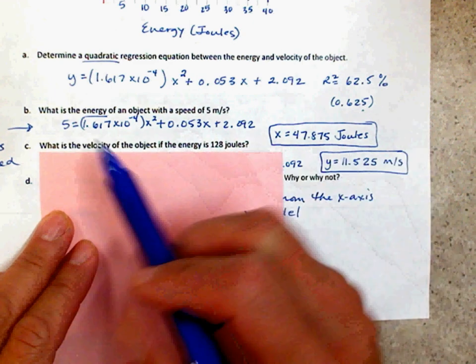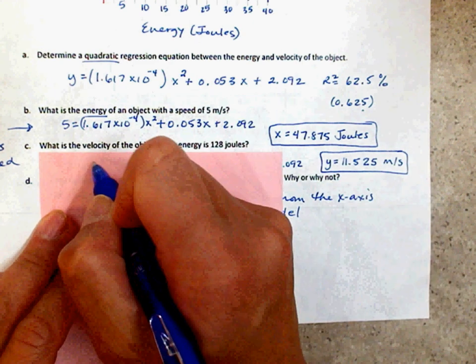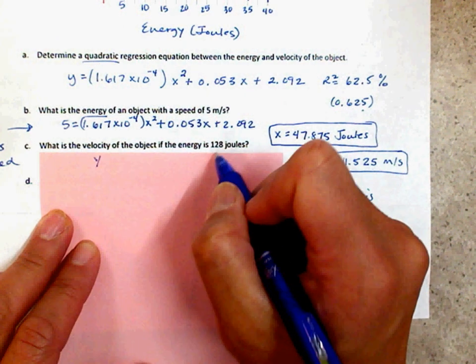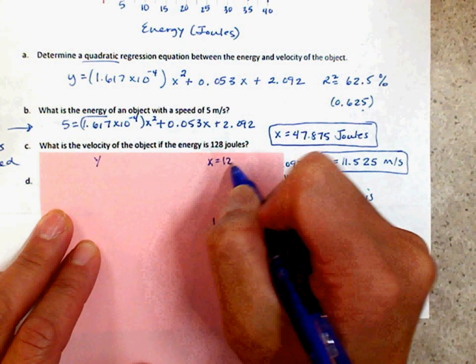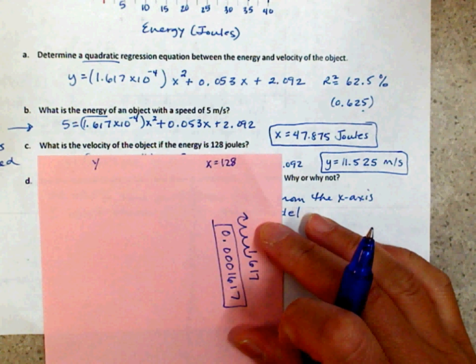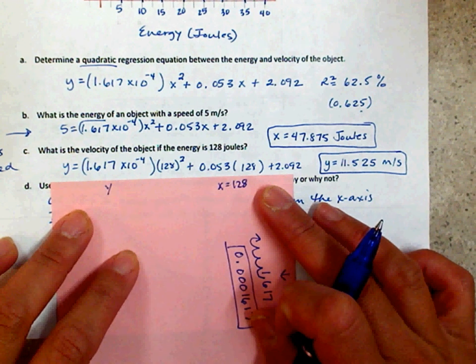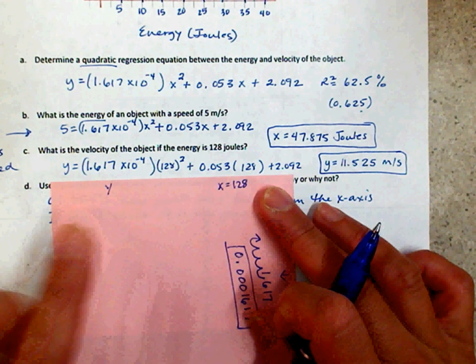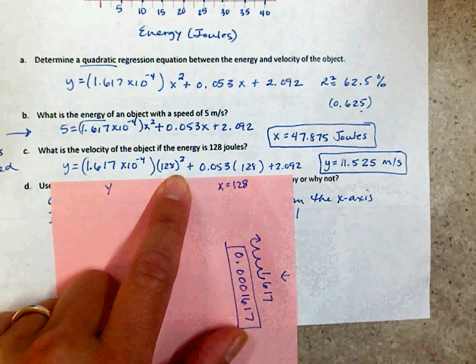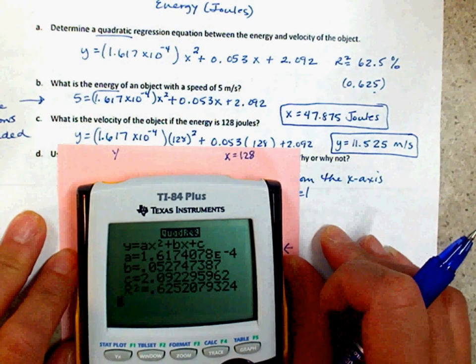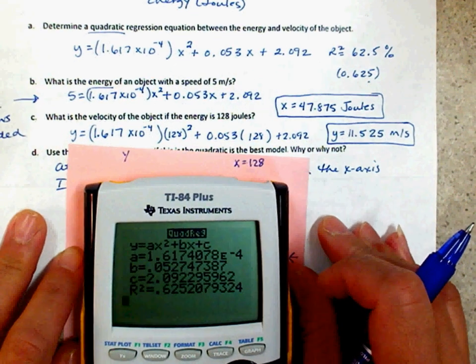It says, what is the velocity? What is my y value of the object if the energy is x equals 128? Two ways. Actually, three ways. You can plug it in. You can use your table. Or you can set your window. I just plugged it in, just like that. Let me show you how to type that in on a calculator with that E.